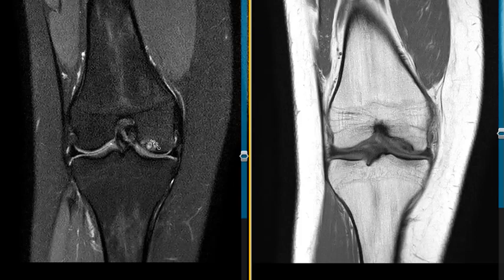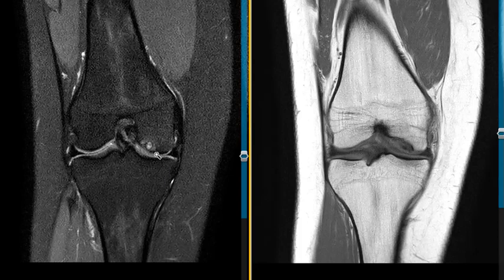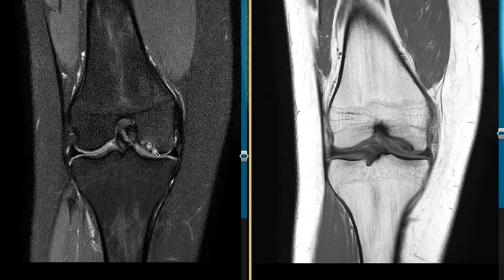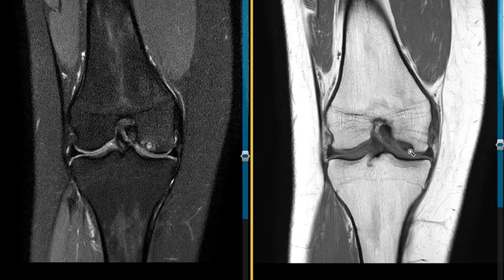There is no fluid dissecting between the osteochondral defect and the bone, so this is not loose. There's no fluid in between them and there is no displacement. So we say this is an osteochondral defect with a little bit of marrow edema, compatible with osteochondritis dissecans, with no evidence of loosening or displacement.